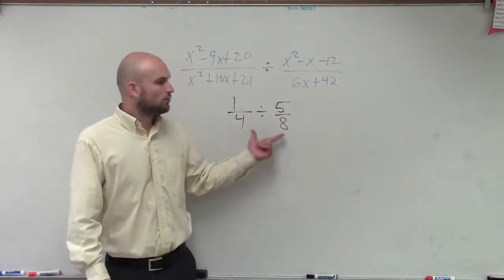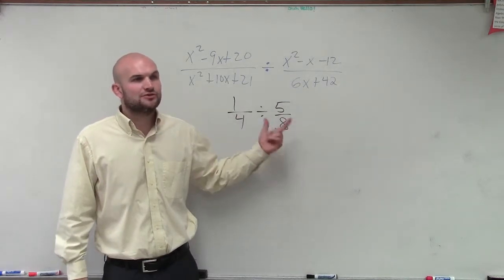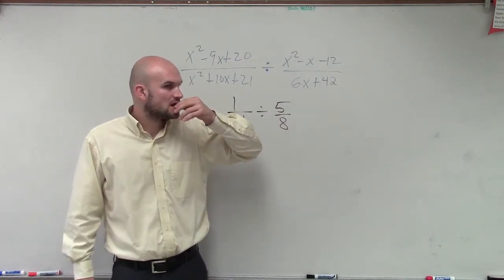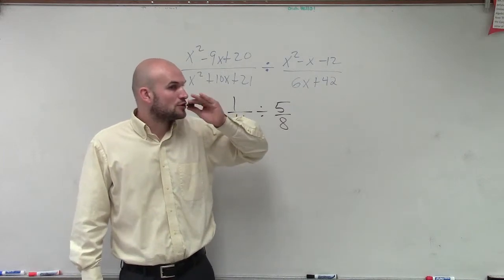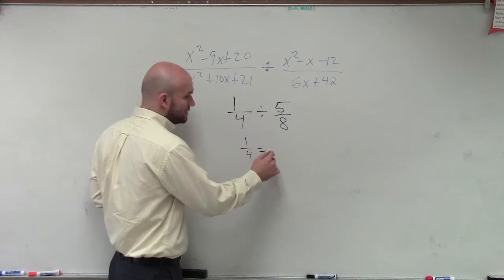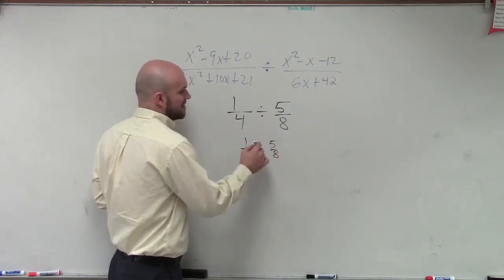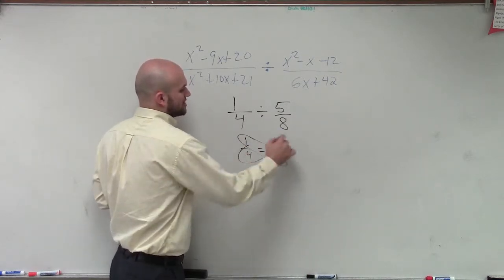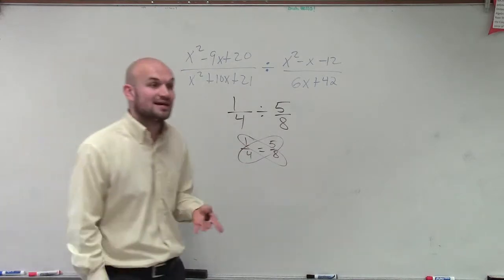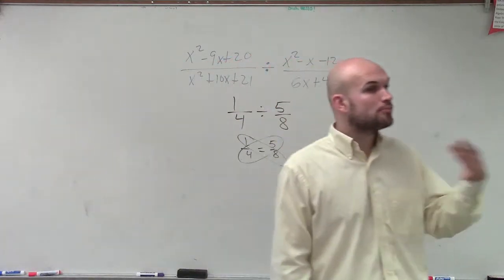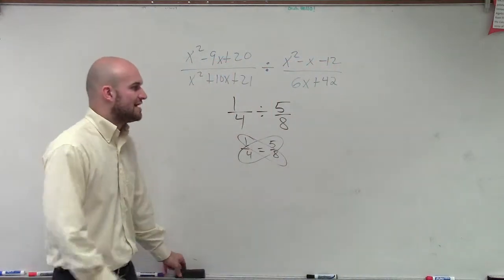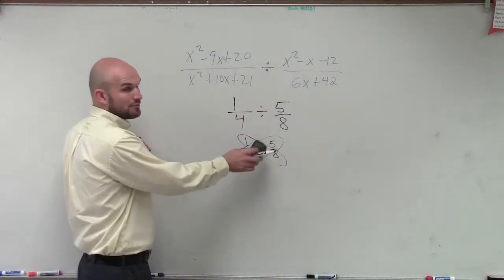So what would be the next step? What would I have to do to divide these fractions? Close. If I had 1/4 equals 5/8s, that's when we cross multiply. So cross multiplication is a process we use to solve a proportion, but that's not going to help us multiply or divide fractions — that's something we use when we have a proportion.